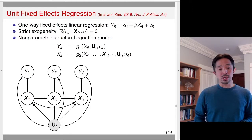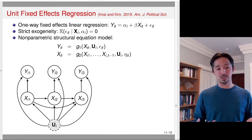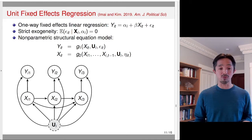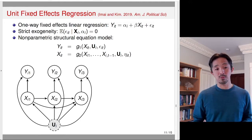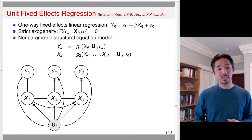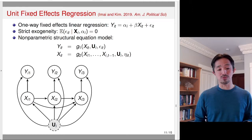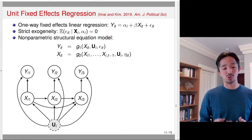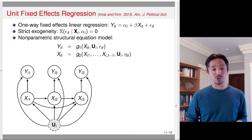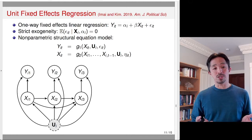We can represent this model using a DAG, which will make everything clearer. You can think of this as a non-parametric version of the unit fixed effects regression. I'm going to use U_i to represent a set of unobserved unit-specific time-invariant confounders, and the linear regression model is a special case of this non-parametric structural equation model. As you can see, y_it is affected by x_it as well as U_i and the error term. There are arrows from x1 to y1, x2 to y2, and x3 to y3. X_it is affected by previous x's as well as the unobserved confounder U.